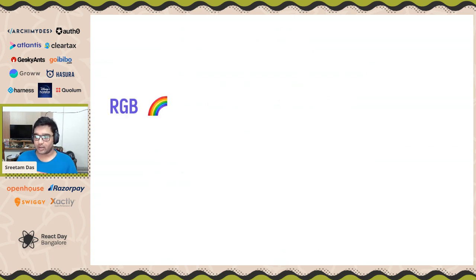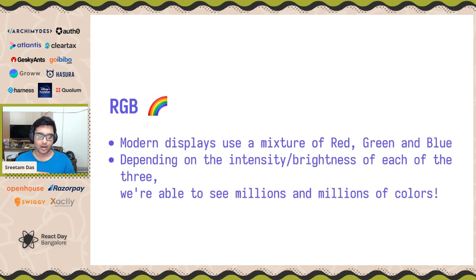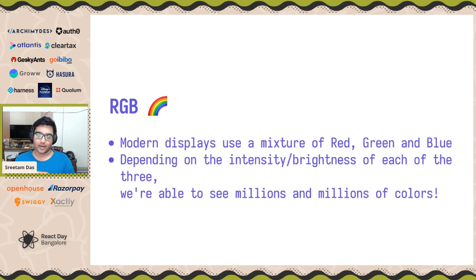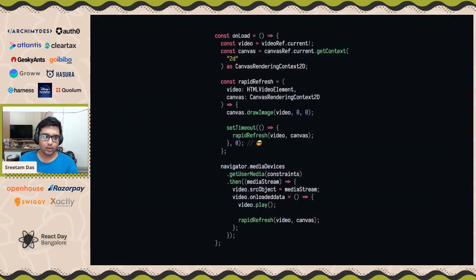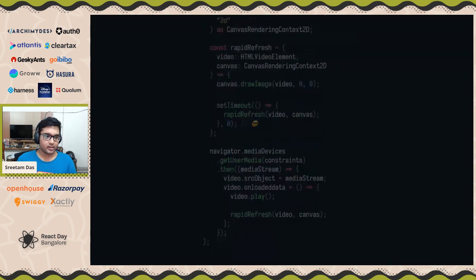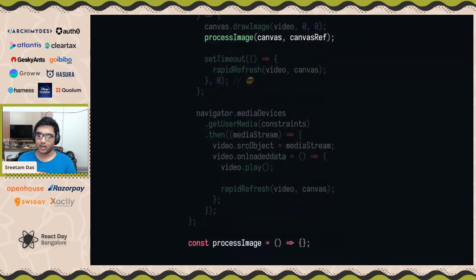The next thing is actually understanding how a pixel works. Anything that we see is usually a mixture of red, green, and blue. On all these modern devices, depending on the intensity and brightness of each of these three individual colors, we're able to see millions of colors rendered on the display. Using this information, let's try to start processing our image.